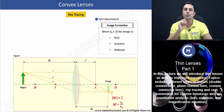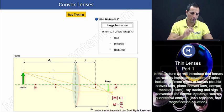Next, let's take a look at what type of image is formed where the object's distance lies between the focal length and two times the focal length. And we'll do that on the next slide.